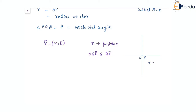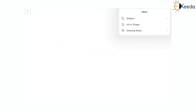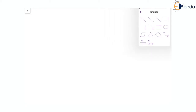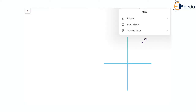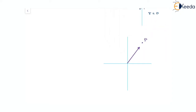So the range for theta is 0 to 2π, and R is positive. If R equals 0, that means the pole itself is the point P. This is how we relate terms in polar coordinates. Now let us discuss the relationship between Cartesian and polar coordinates, placing point P in the first quadrant.